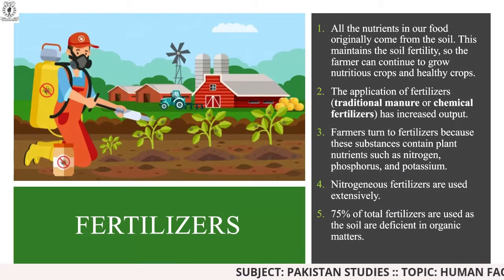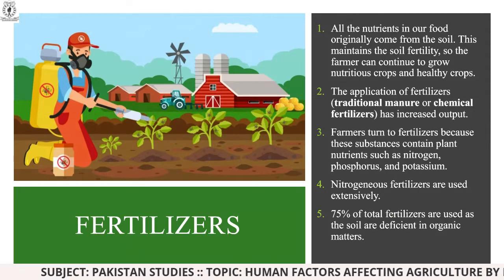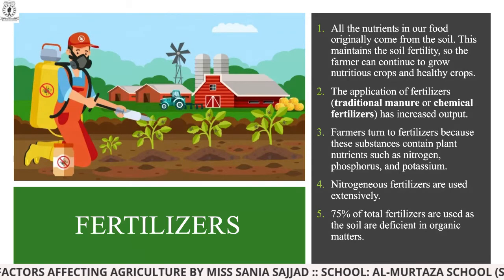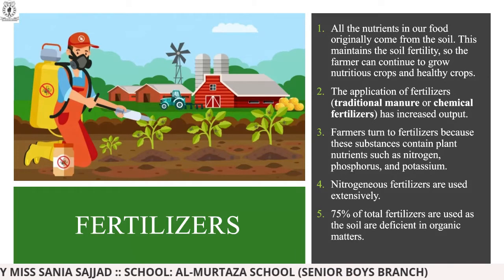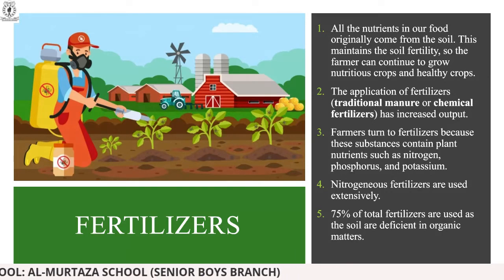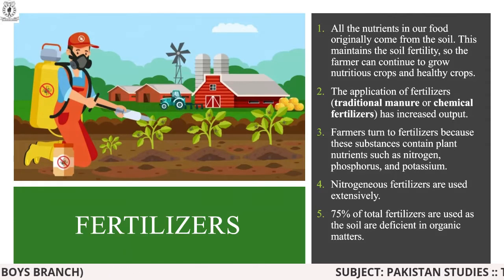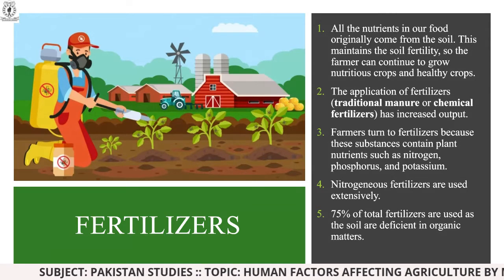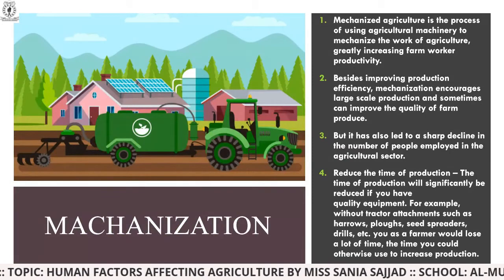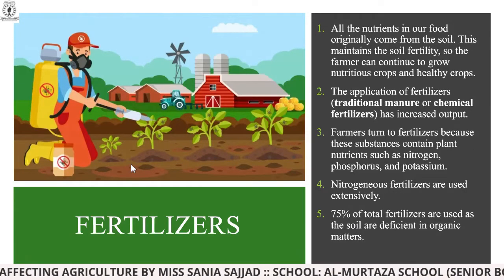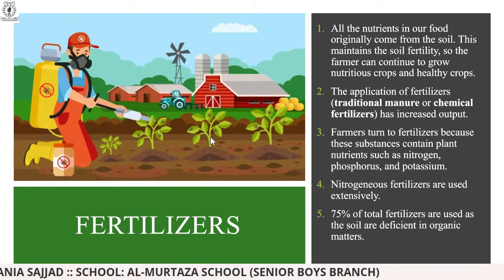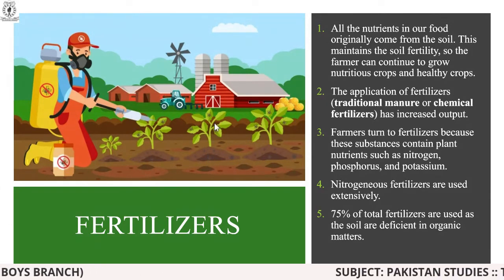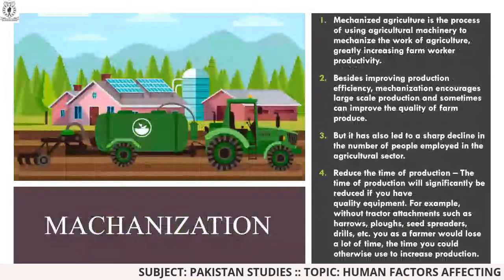Nitrogenous fertilizers are used extensively. 75 percent of total fertilizers are used because the soil is deficient in organic matter, meaning these fertilizers provide organic supplies. You can see the picture on the left side showing fertilizers in the soil delivering nutrients to plant roots — this is how the system works.